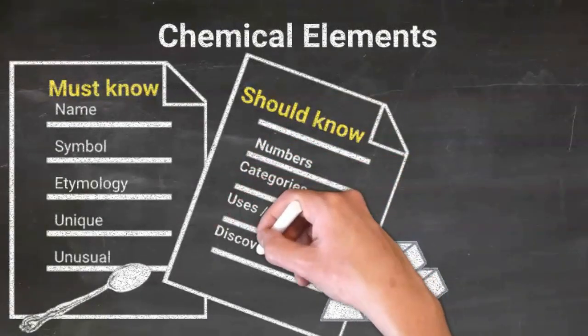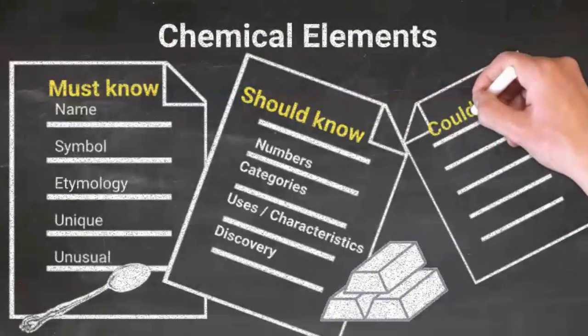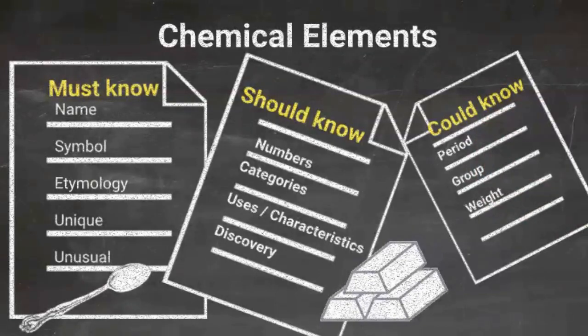Knowing the different categories of elements will get you points, and if you know the uses and properties of different elements, it will help you to make educated guesses. Some people discovered multiple elements, so ensure you know your Curie elements from your Berzelius ones. Finally, you could learn the periods and groups and the atomic weight of each element, but really life is too short for that.